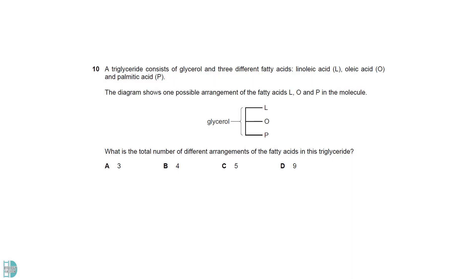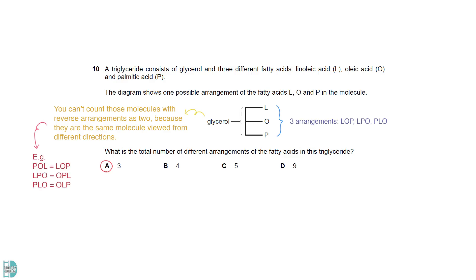Since all 3 fatty acids must be included, there are 3 arrangements. Note that you can't count those molecules with reverse arrangements as 2, because they are the same molecule viewed from different directions. For example, POL and LOP are the same, so they can only consider it as one arrangement.